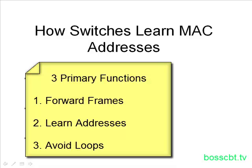In order for the switch to actually forward a frame, it needs to know where to send it. Just like you can't send somebody an email without knowing their email address, it's the same thing here — if the switch doesn't know the destination address, it can't forward the frame. So it has to learn the addresses connected to it. The third function, which we cover in a different tutorial, is loop avoidance.